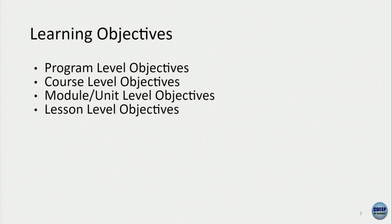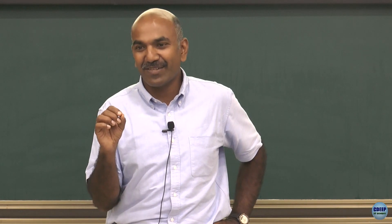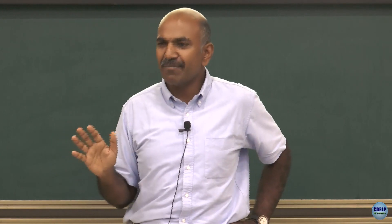I also talked about the different levels: the program level and course level objectives. I told you there is one word you should not use while you write — 'understand.' But you can use it in program-level or course-level objectives as a goal. I was specifically referring to lesson-level and module-level objectives. In program and course level, you can use it because it is a bigger-picture kind of thing.